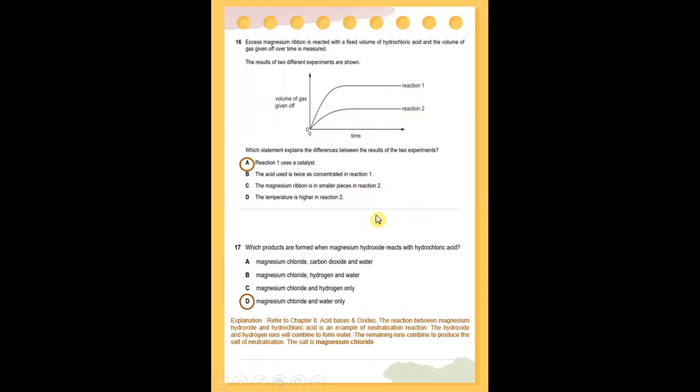Which products are formed when magnesium hydroxide reacts with hydrochloric acid? Refer to chapter 8, acids, bases, and oxides. This reaction is an example of neutralization. The hydroxide and hydrogen ions combine to form water, and the remaining ions combine to produce the salt of neutralization, which is magnesium chloride. So, the products formed are magnesium chloride and water only.